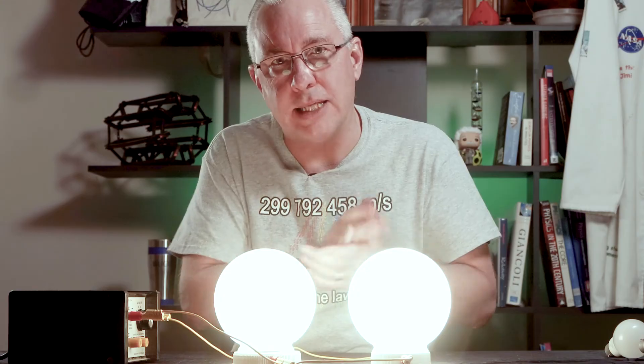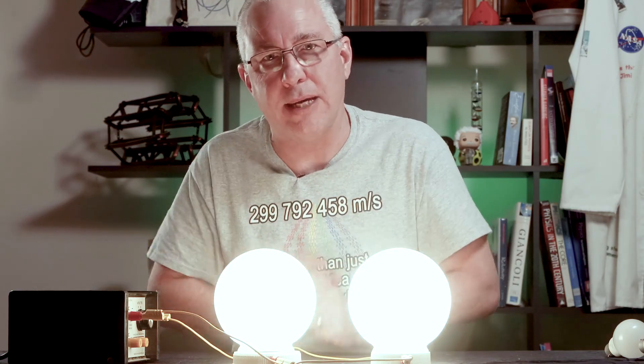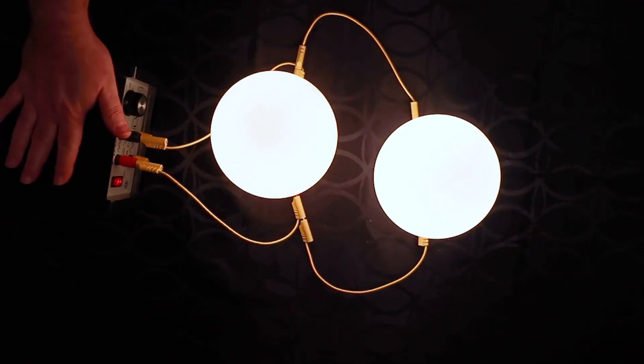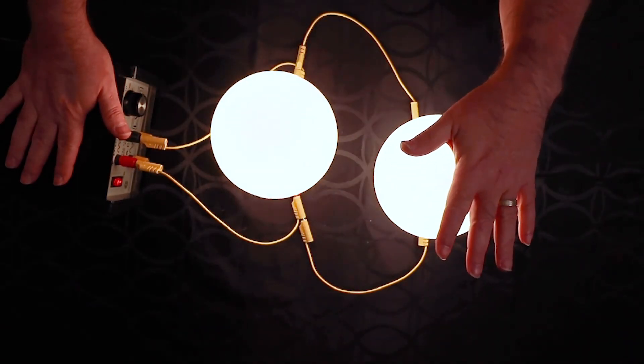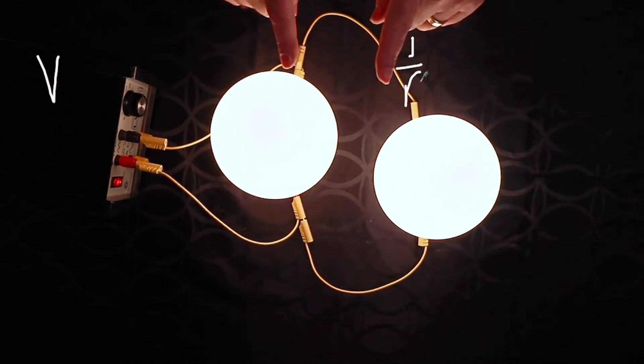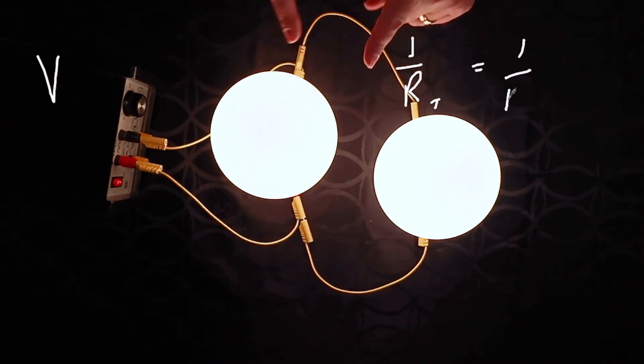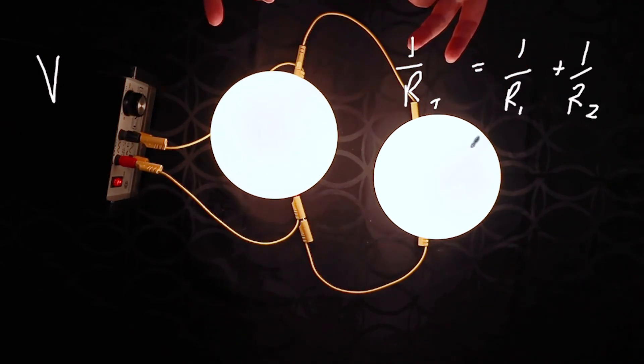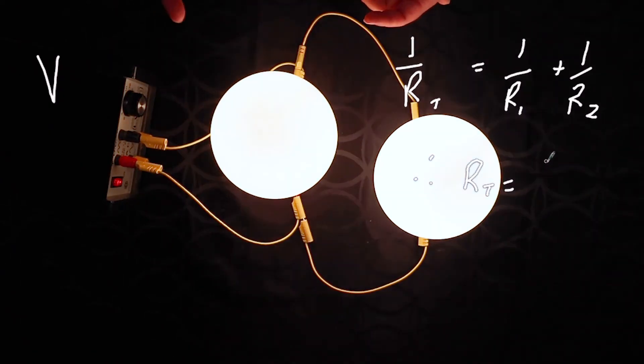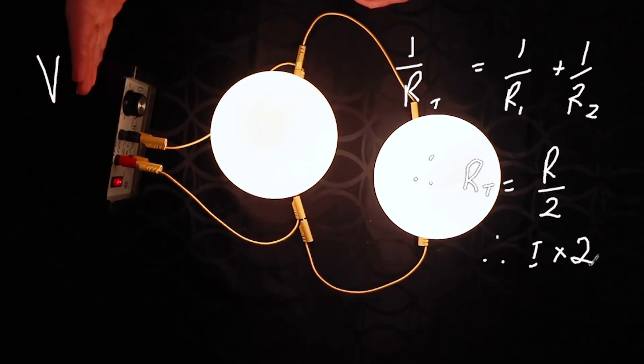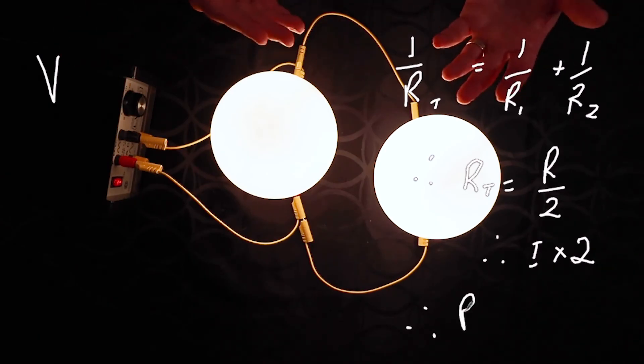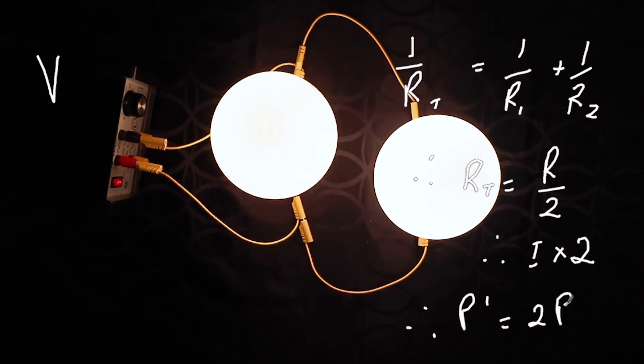Now clearly by adding another globe that's obvious but can we look at it from a mathematical perspective? My voltage is still the same. The voltage here is still the same. The voltage here is still the same. But by adding another resistor in parallel the effective resistance hasn't doubled it actually is halved. Which means by a way of P equals VI if my resistances halved my current has doubled as in the total current. And so as a result the power output and power transformation increases by a factor of two.